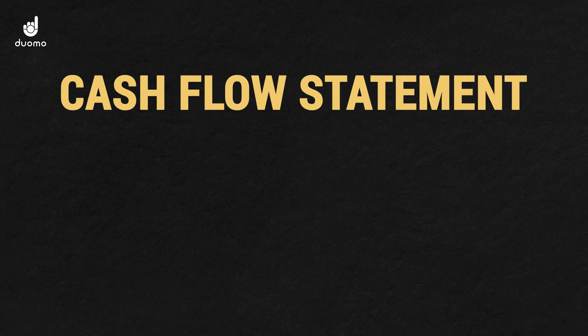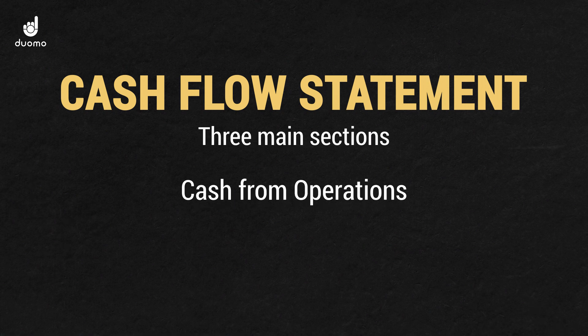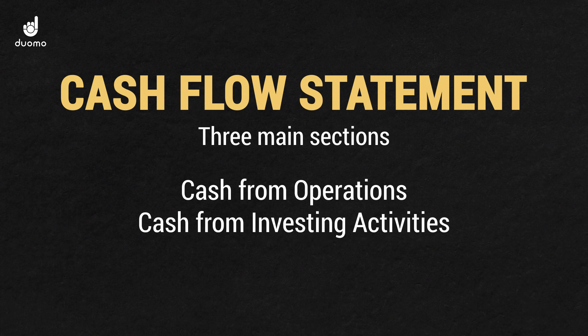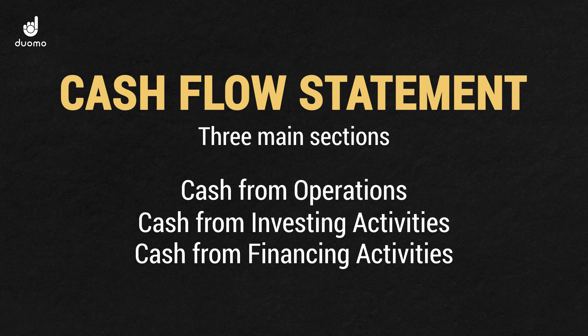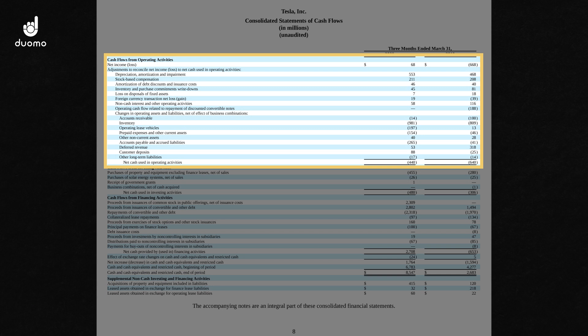The cash flow statement is usually split into three main sections: cash from operations, cash from investing activities, and cash from financing activities. The first section shows us the cash flow from the primary revenue-generating activities of a company — so this includes the company's products or services. Things like cash from sales, rent payments, salary payments, and so on. Cash flows from current assets and current liabilities.